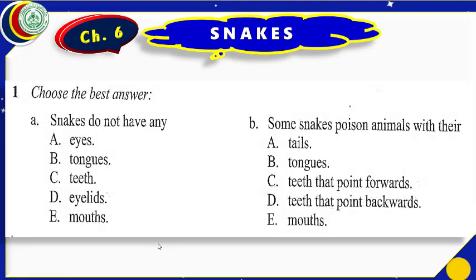Dear students, that was the last part of our lesson. I think you have got some understanding of the passage and noted the main points about snakes. With the help of these main points we shall do the exercises given at the end of this lesson. Let us start the first exercise. In the first exercise we are asked to choose the best answer. Snakes do not have — eyes, tongues, teeth, eyelids, or mouths?